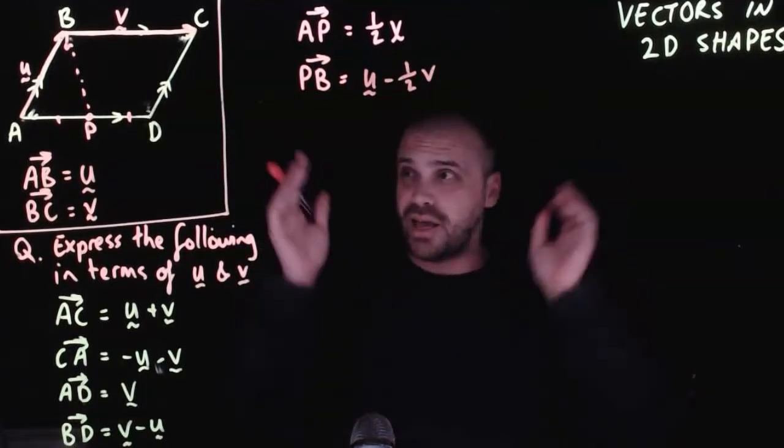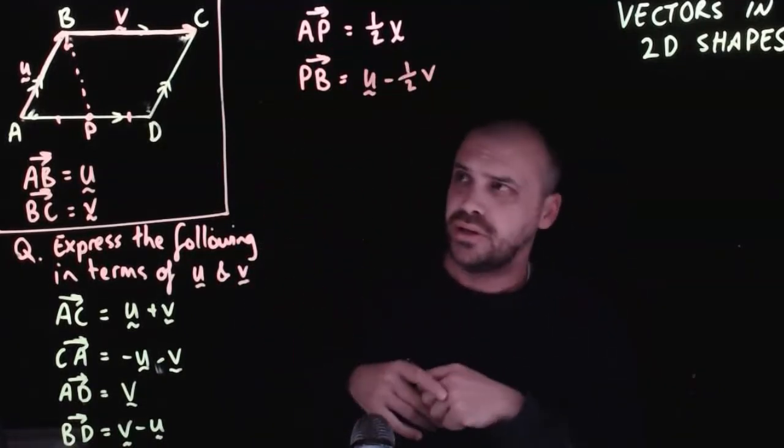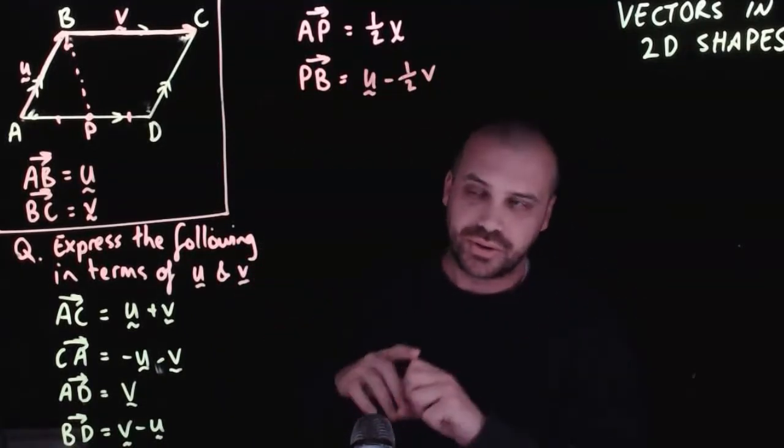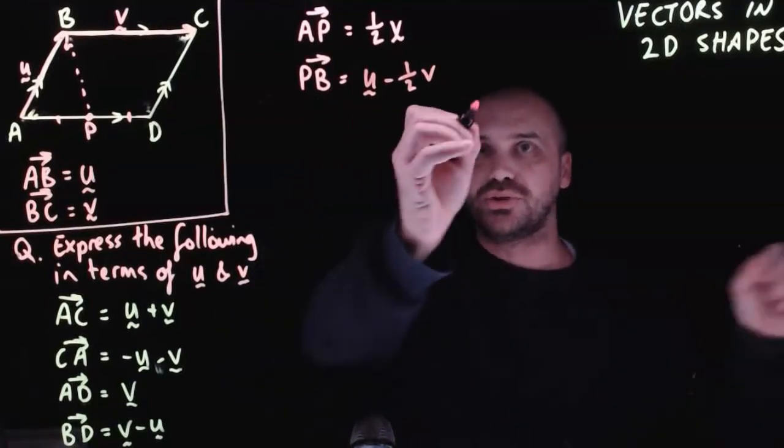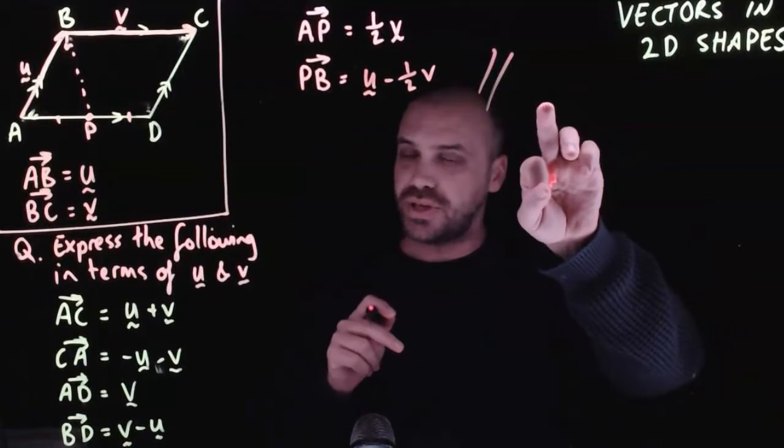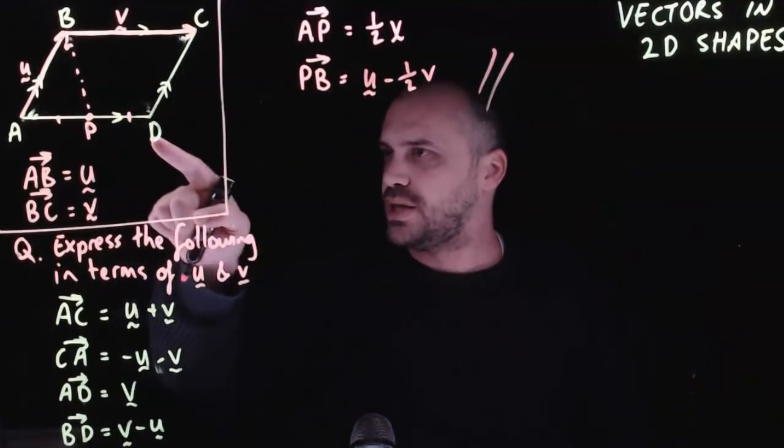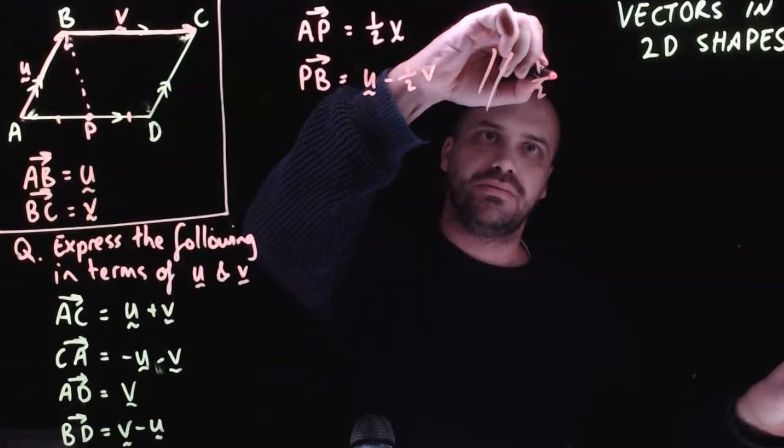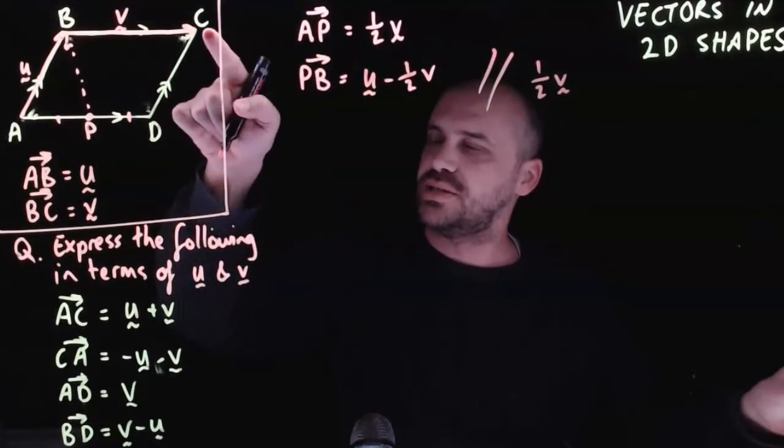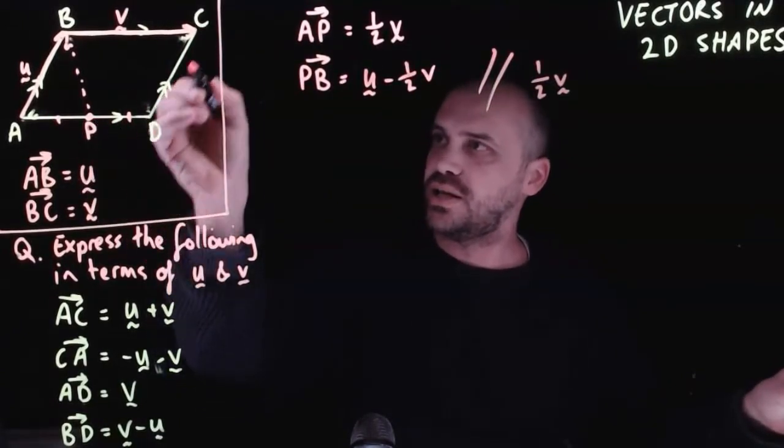Now, you might be thinking, how do you know which way to go? It doesn't really matter which way you go. You'll still be fine. So if I was trying to do vector PB an alternative way, let's do it an alternative way over here. We're going to go from P to D, which is half of vector V. We're going to go from D to C.